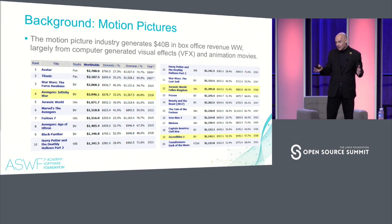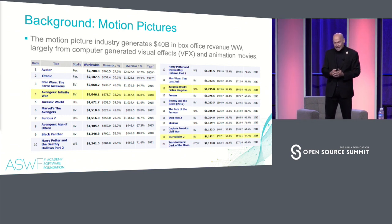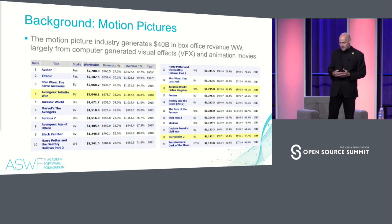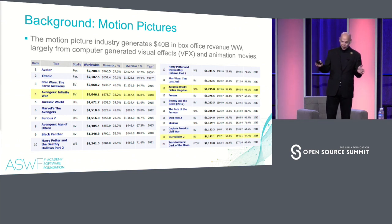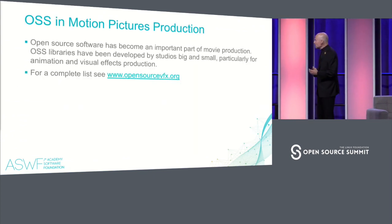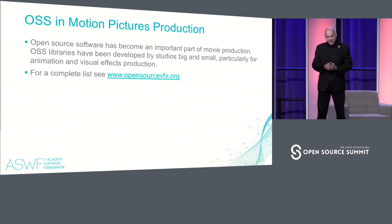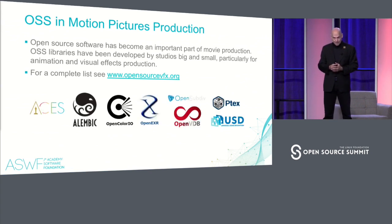The motion pictures generate a lot of revenues in other ways — from video streaming, theme park toys, and all kinds of things. But what's interesting to note when you look at this list of movies is that they are all either visual effects movies or animation movies, essentially computer generated and done with software, with artists using software. You have to go down the list to number 138, most profitable movies of all time, to get to a pure live action movie.